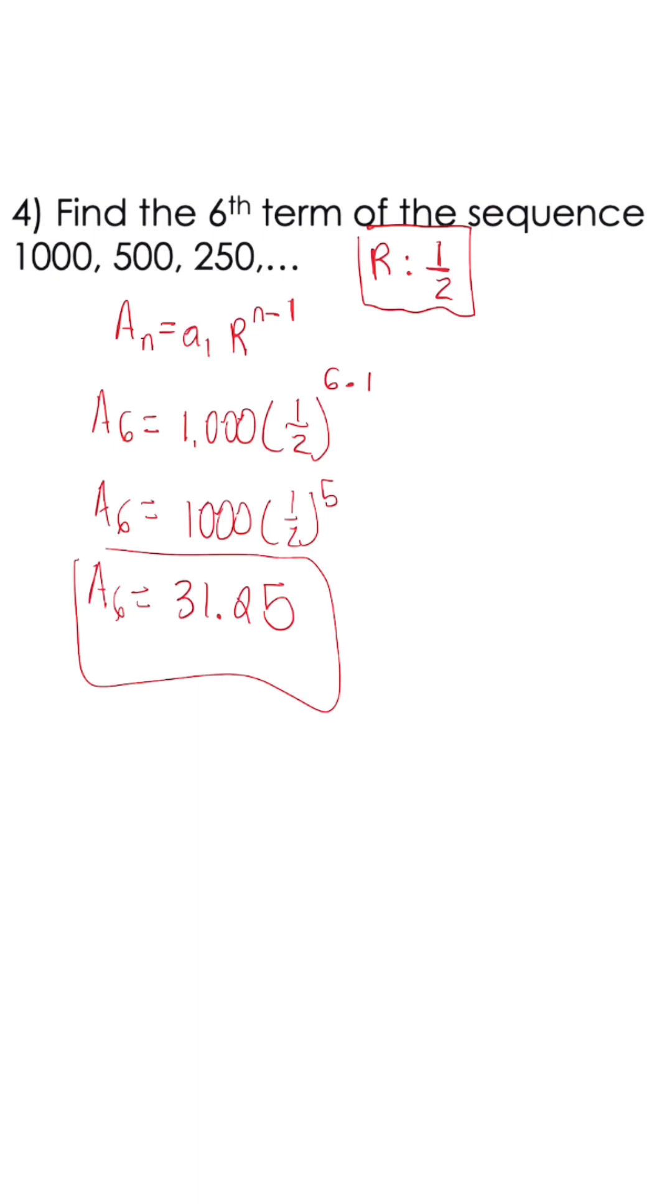When working with geometric sequences, remember we're dealing with multiplication. If the numbers are getting smaller, that doesn't mean a negative is involved—it often means we're multiplying by a fraction.